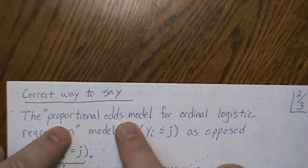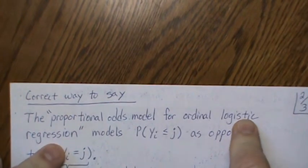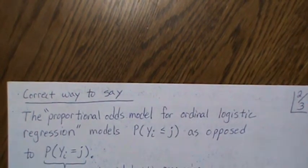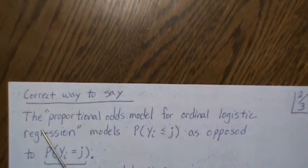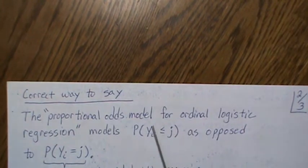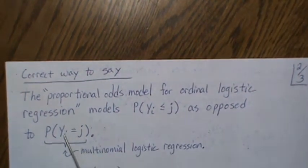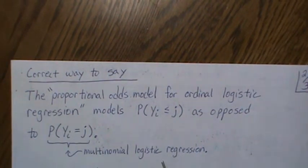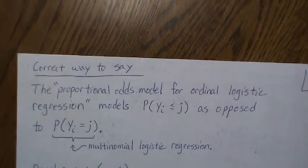And the reason is, most people use the logistic regression because of the ease and the interpretation of the coefficients. But really you need to say, put the for ordinal logistic regression because there's proportional odds models for other distributions too. So the proportional odds model for ordinal logistic regression models the cumulative probability as opposed to the probability of a category. Now, if we were modeling this, then it would be multinomial logistic regression. But in this video, we're doing ordinal logistic regression. So we're modeling the cumulative probability.